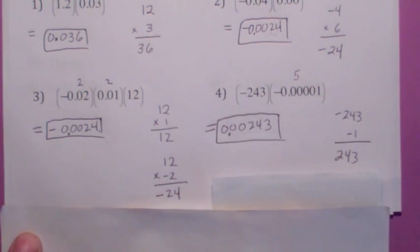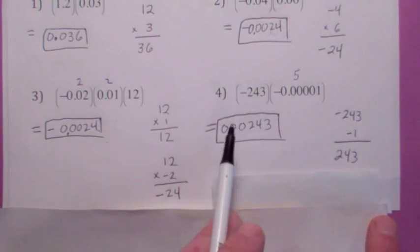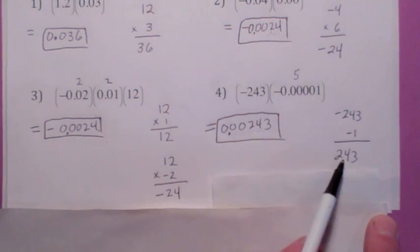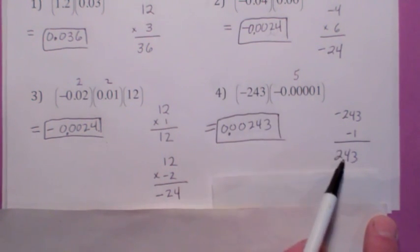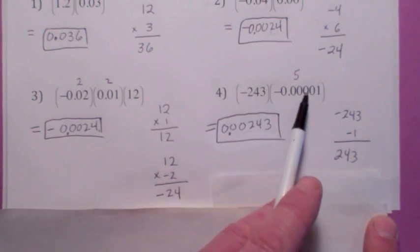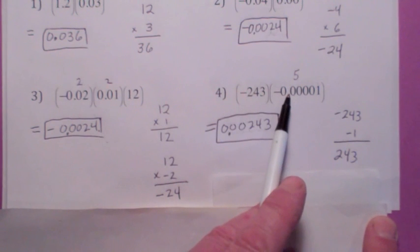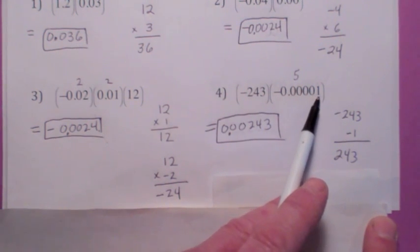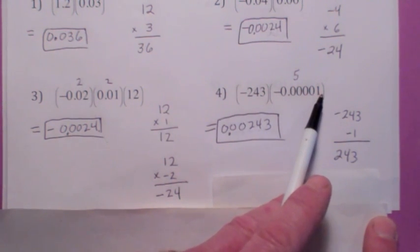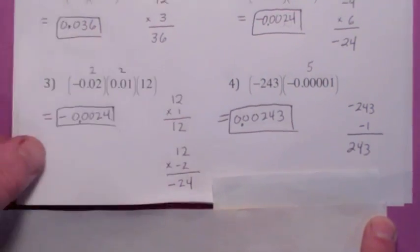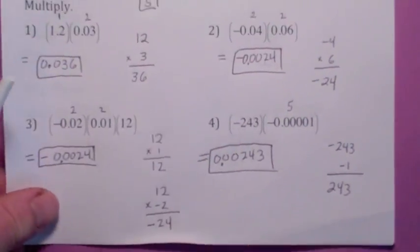This one — pretend this is negative 243 times negative 1, which is positive 243. But how many places to the right did you move the decimal to make it a 1? 1, 2, 3, 4, 5 to the right. So you've got to move it back 5 to the left. Your answer is 0.00243.